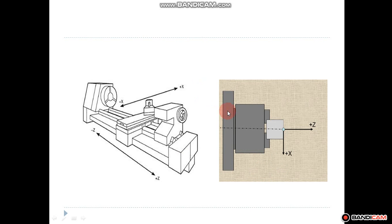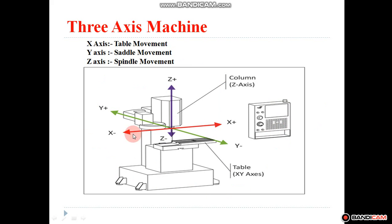Next are the three axis machines. In three axis machines, movement occurs in three axes: x, y, and z. The x movement is the movement of the table, y is the movement of the saddle, and z is the movement of the spindle. For axis identification: when the table moves to the right with respect to the tool it is positive x; to the left it is negative x. When the saddle moves towards the spindle it is positive y; away from the spindle it is negative y. When the tool moves towards the workpiece it is negative z; away from the workpiece it is positive z.